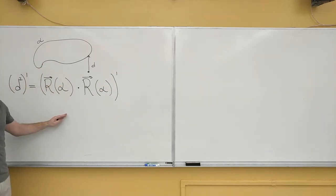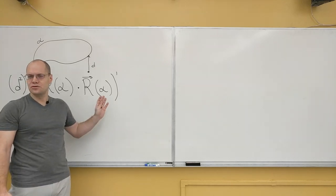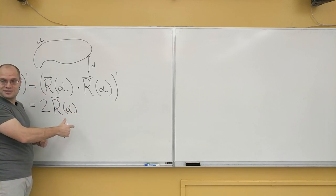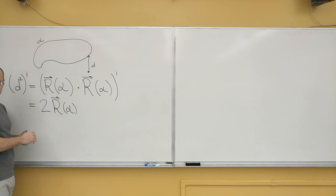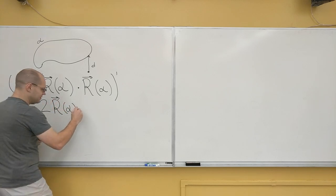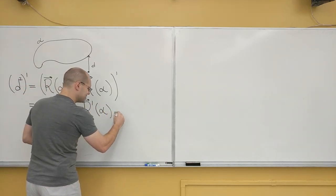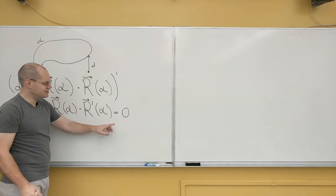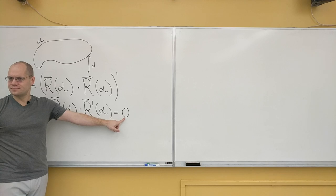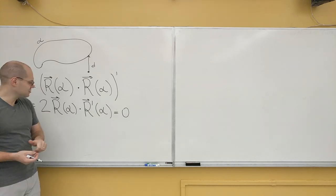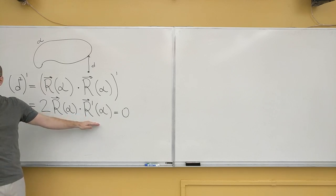Using the product rule, which we have not yet justified but we will, we'll have two identical terms: R'(α)·R(α) + R(α)·R'(α) = 2R(α)·R'(α) = 0. The question is: is it zero the vector or zero the number? Number. Dot product equals number, correct. That's the analytical result: the dot product of R with its derivative equals zero.